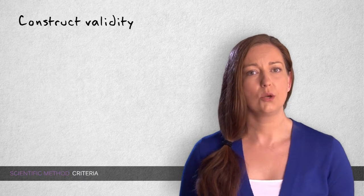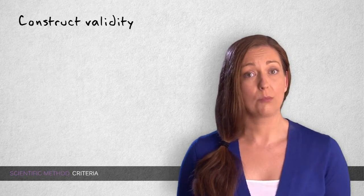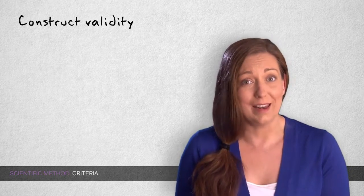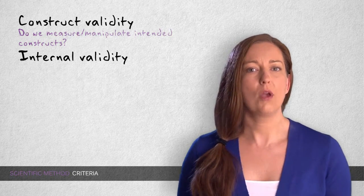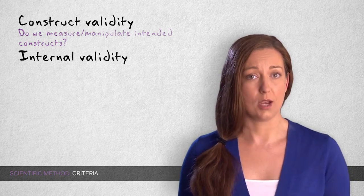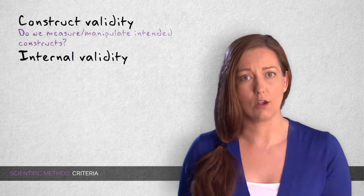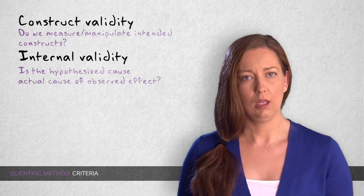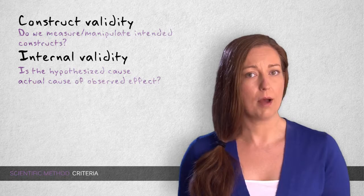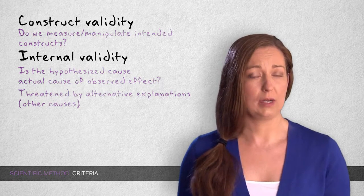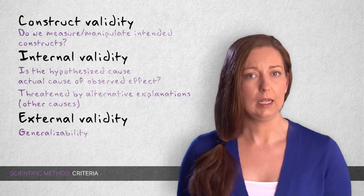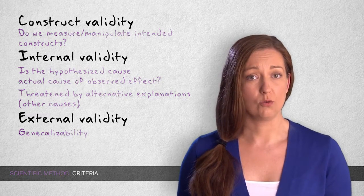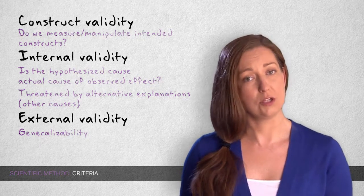To summarize: construct validity relates to whether our methods actually reflect the properties we intended to manipulate and measure. Internal validity relates to whether our hypothesized cause is the actual cause for the observed effect — it is threatened by alternative explanations. External validity, or generalizability, relates to whether the hypothesized relation holds in other settings.